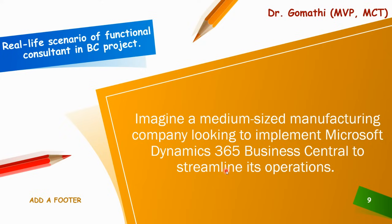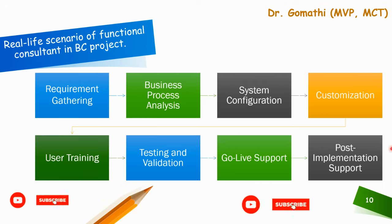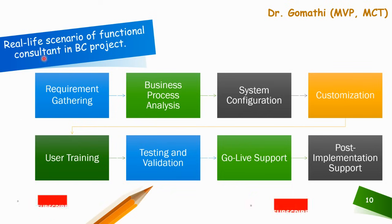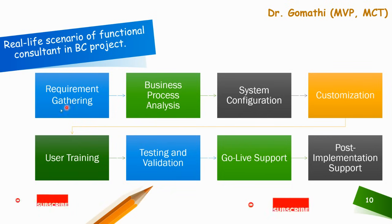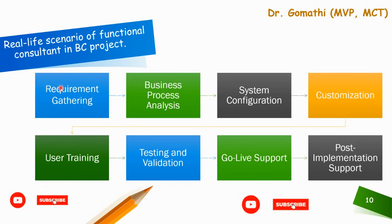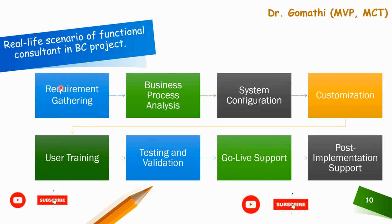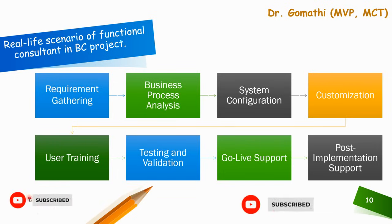Here is a scenario of what you will be doing as a functional consultant. The very first thing is requirement gathering — you conduct meetings with stakeholders from different departments such as finance, production, inventory, and sales, to understand their current processes, pain points, and desired improvements. Next is business process analysis — you analyze the company's existing business processes, such as order-to-cash, procure-to-pay, production planning, and financial reporting, to identify areas for optimization and automation.